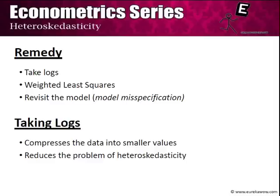We now turn to our last topic in the study of heteroscedasticity: remedies. Once we have detected heteroscedasticity, what can we do about it? There are three remedies studied in this module: first, take logs; second, the weighted least squares method; and third, revisit the model for possible misspecification. Since model misspecification has already been dealt with in another module, we focus on the first two. Taking logs compresses the data into smaller values, thereby reducing variability and hence reducing the problem of heteroscedasticity. This is a very ad hoc remedy but can be quite effective in several cases.